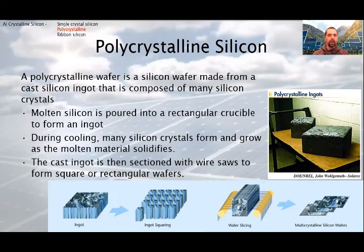Polycrystalline panels are made using a completely different method than the monocrystalline panels. In the manufacturing process of polycrystalline cells, liquid silicon is used as a raw material. In a rectangular vat, it is allowed to cool down. This cooling down process is slow, thus over several hours. During this, the impurities drift to the edges, which cool last. The edges are sawn or acid etched off. During cooling, many silicon crystals form and grow as the molten material solidifies. And finally, the cast ingot is cut into sections with wire saws to form square or rectangular wafers.